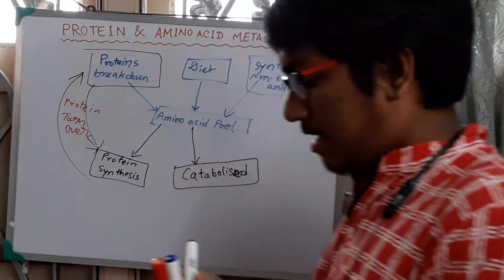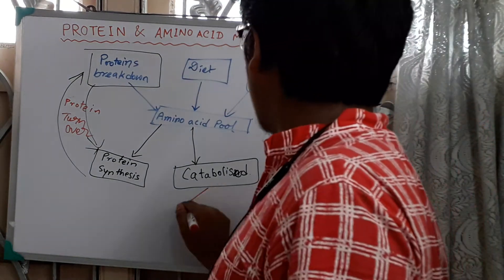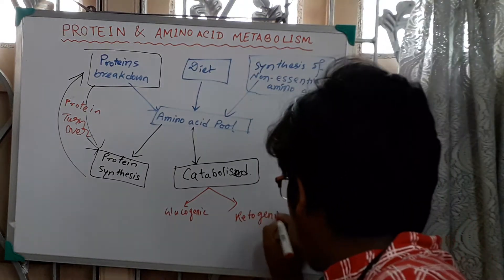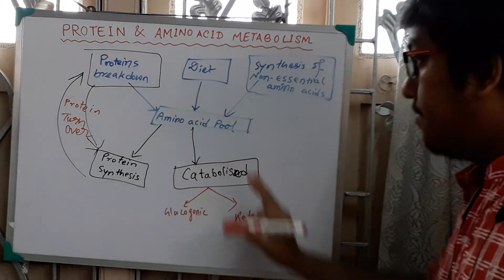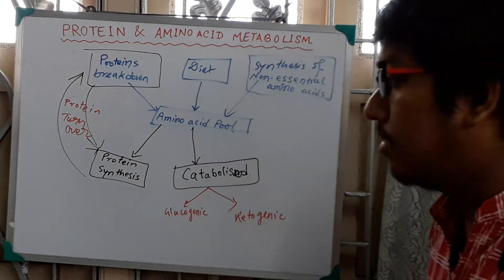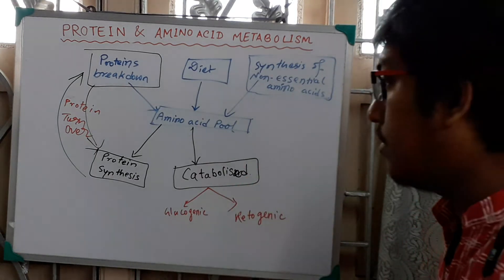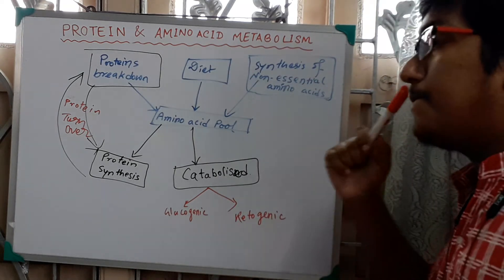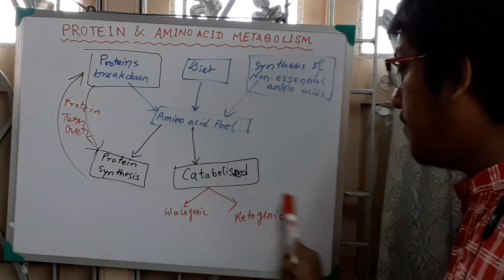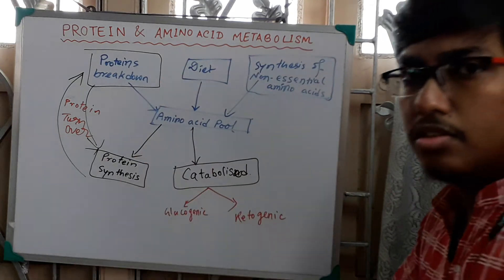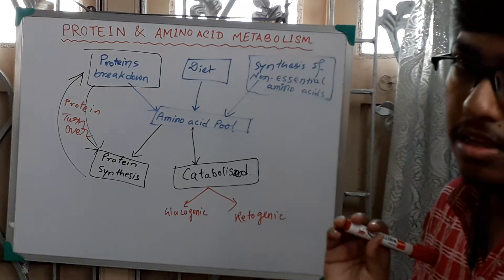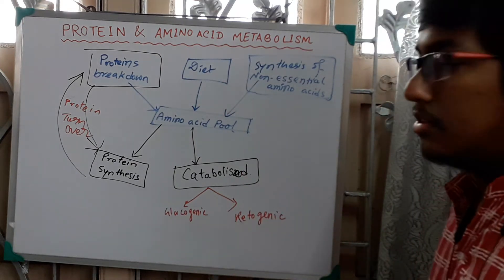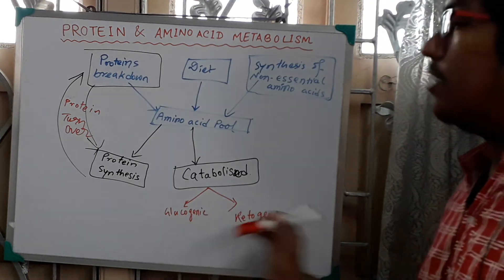The amino acids catabolized can be divided into two groups: glucogenic and ketogenic products. If the molecules produced from amino acid catabolism re-enter the gluconeogenic pathway, then that is a glucogenic amino acid. But if the final product of the catabolized amino acid re-enters into fatty acid synthesis, that is a ketogenic product and the amino acid is called ketogenic. Some amino acids can catabolize to both products, so those are called both glucogenic and ketogenic amino acids.